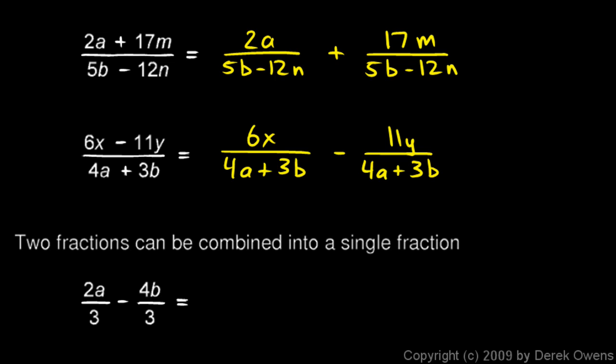And we'll also say that two fractions can be combined into a single fraction if they have the same denominator. Here we have 2a over 3 minus 4b over 3. That can be written as 2a minus 4b all over 3.